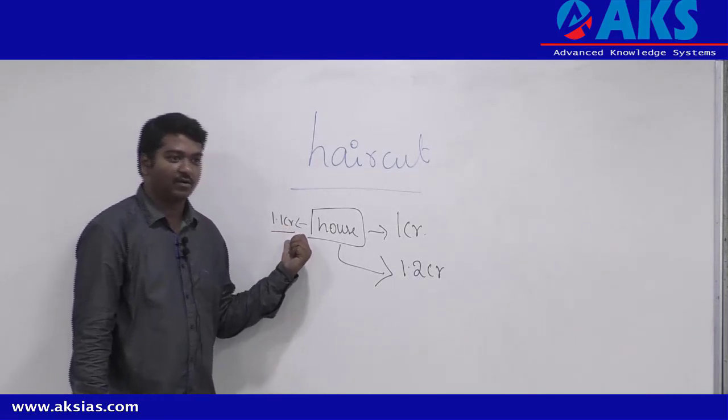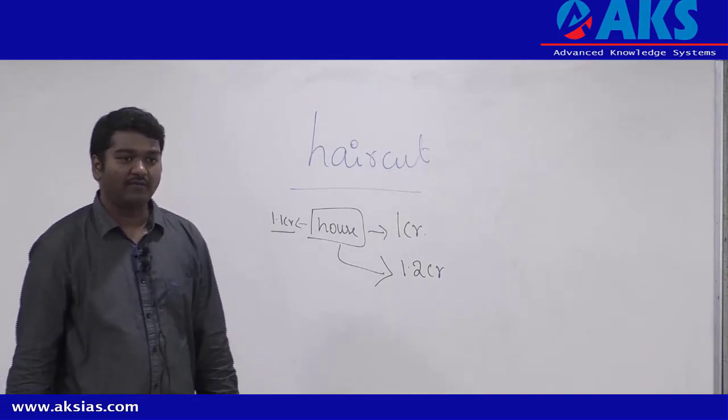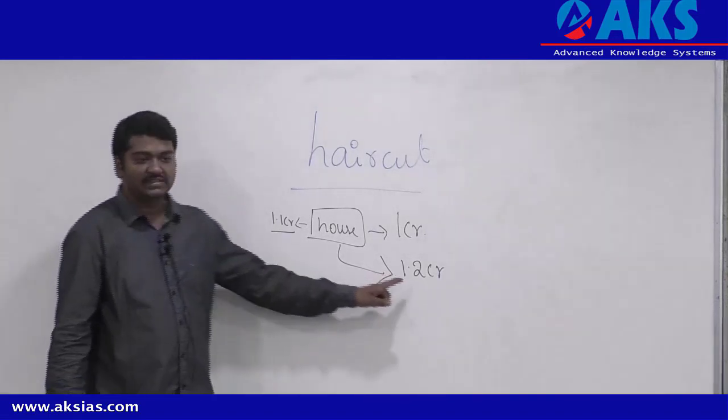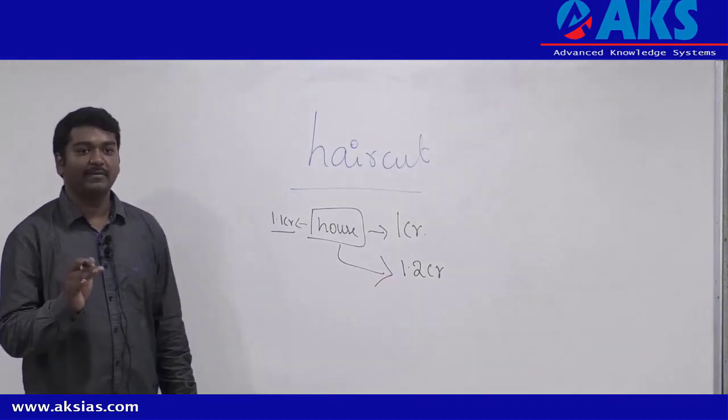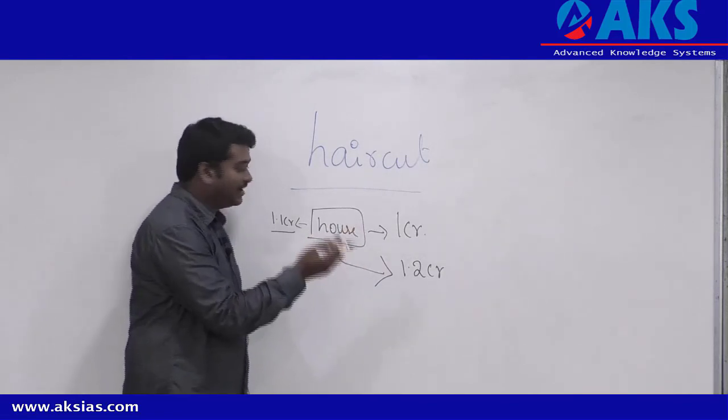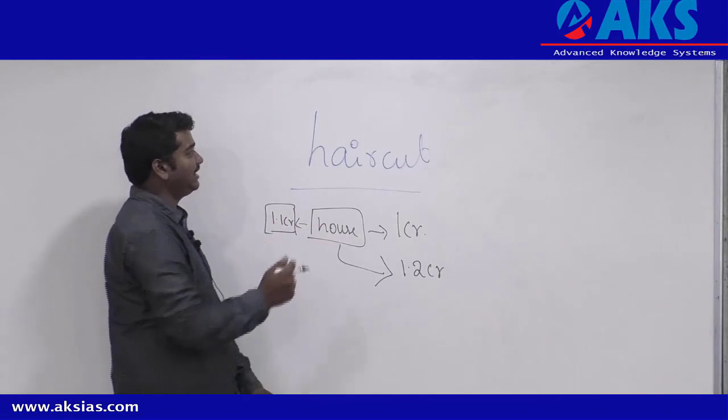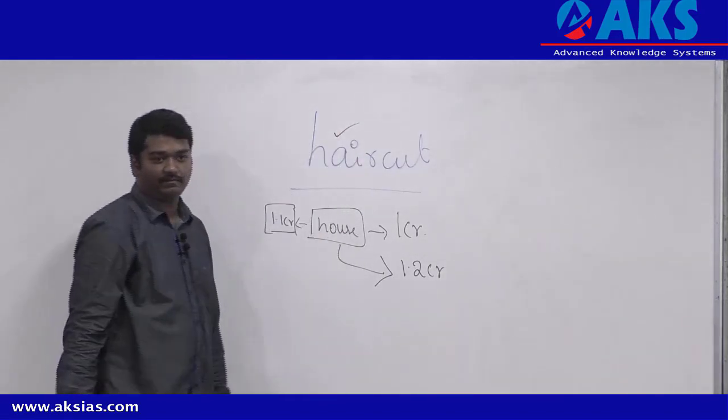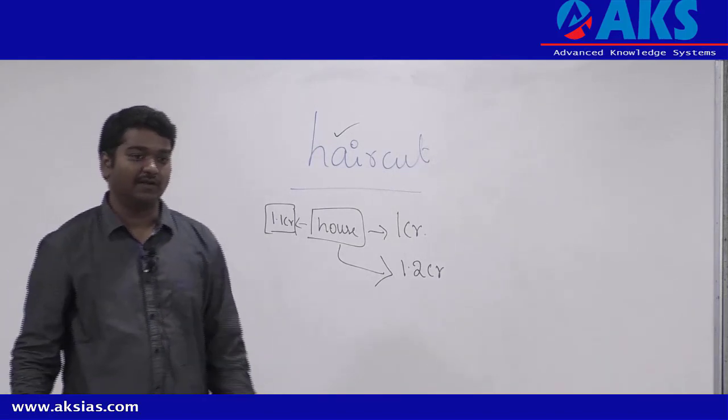How much is the house value? 1.1 crore. If I sell the house, will I recover all the money or will there be some money left? Some 10 lakhs deficit will be there. Now, government has told that you can leave the 10 lakhs and agree for 1.1 crore. Leaving that 10 lakhs is called as haircut.